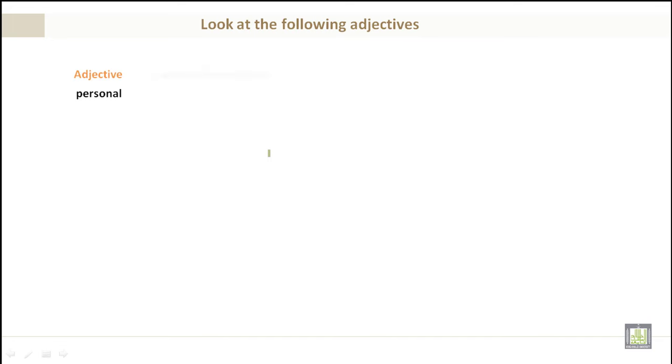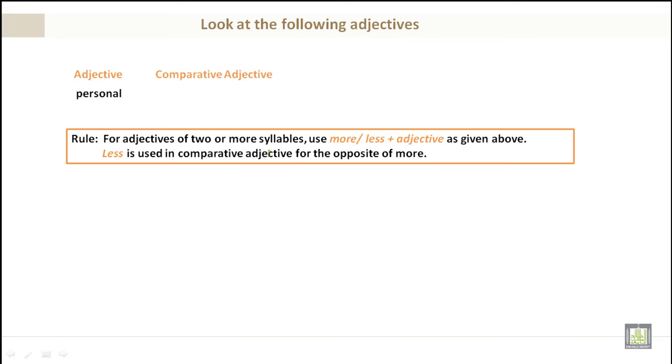Now let's take a look at the following adjectives. For adjectives of two or more syllables, use more or less plus the adjective as given above. Less is used in comparative adjectives for the opposite of more. So let's start with more: personal, three syllables, right? More personal. What about the opposite? Less personal, that's right.